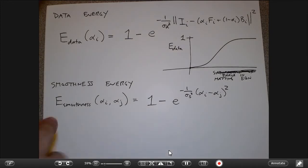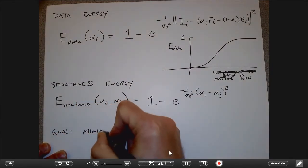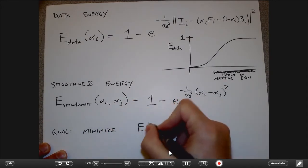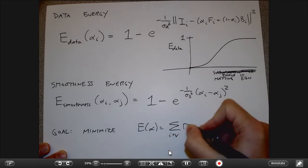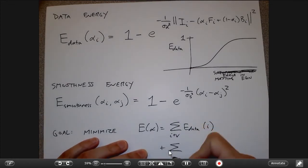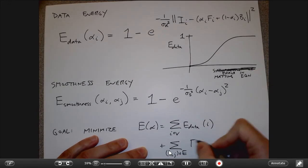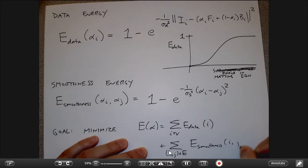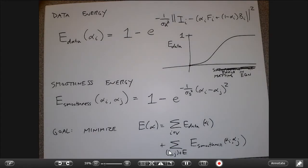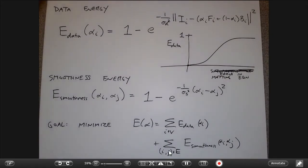The goal is to minimize the sum of the data energy over all vertices and the smoothness energy over all edges. You could also put a constant in front of the smoothness term — if you want smoothness to be more important than fidelity to the matting equation, crank that constant up. Right now both terms are equally weighted.